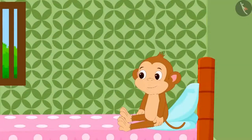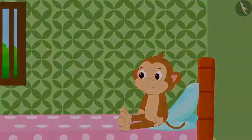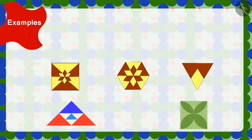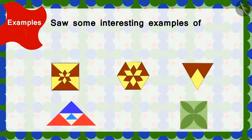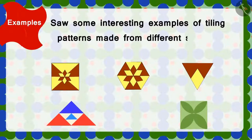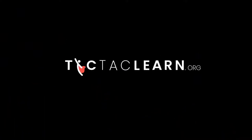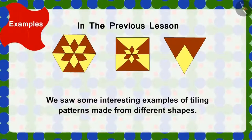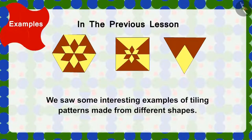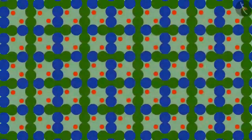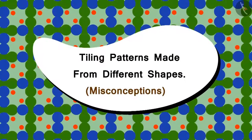Babban has woken up. Look how happy he is looking at his beautiful wall. Children, in this lesson, we saw some interesting examples of tiling patterns made from different shapes. In the previous lesson, we saw some interesting examples of tiling patterns made from different shapes. In this lesson, we will cover some misconceptions related to this.